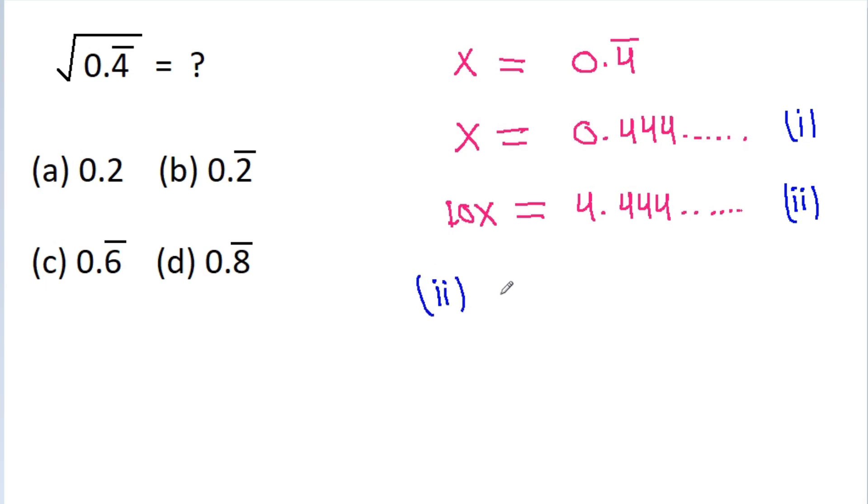Equation 2 minus equation 1, then we get 10x minus x will be 9x is equal to 4.4 bar minus 0.4 bar, it will be 4. And we get x is equal to 4 by 9, or we get root x is equal to 2 by 3.